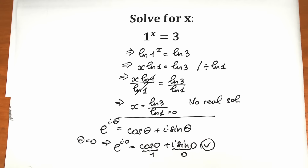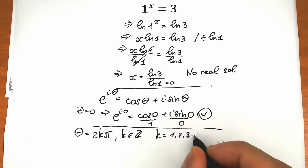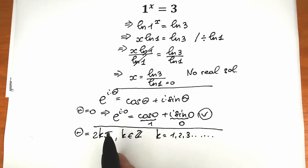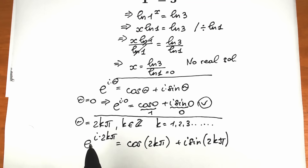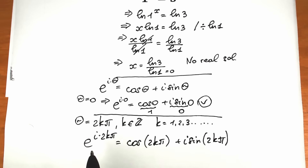Now I suggest a substitution. Instead of theta, let's write theta equal to 2k pi, where k is an integer — k equals 1, 2, 3, and so on. Plugging this into Euler's identity gives us: e to the power i times 2k pi equals cosine 2k pi plus i sine 2k pi.